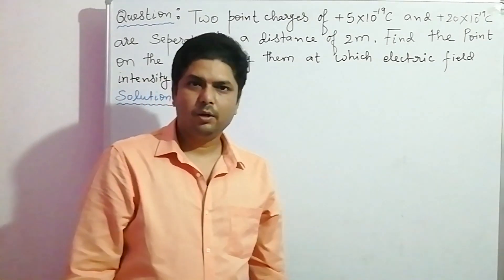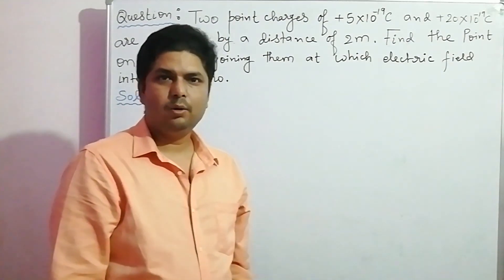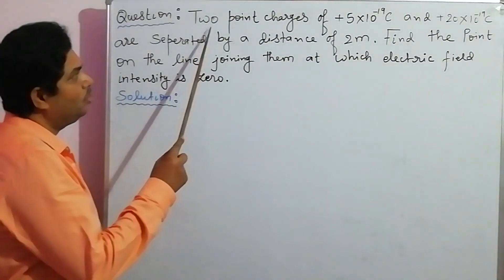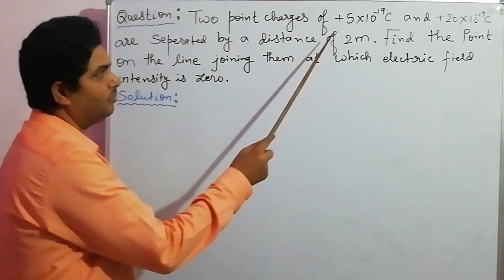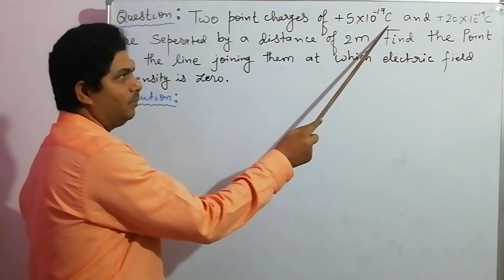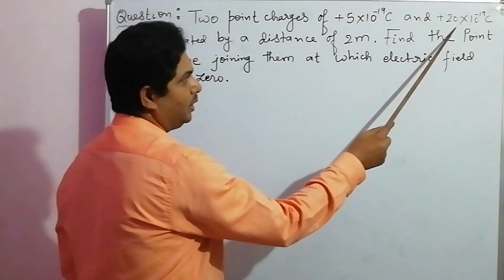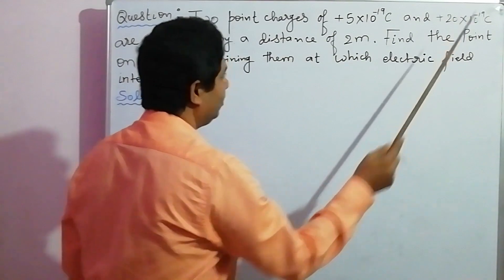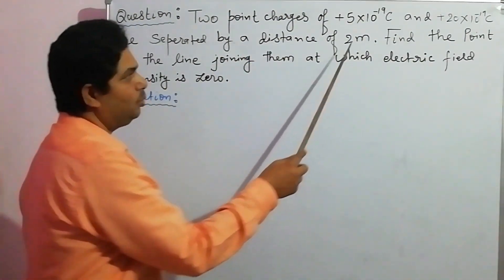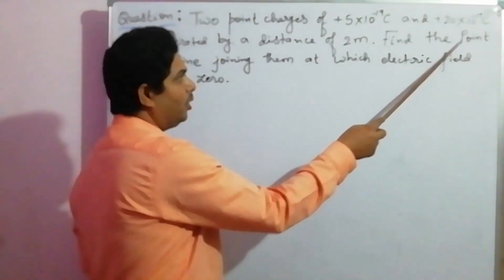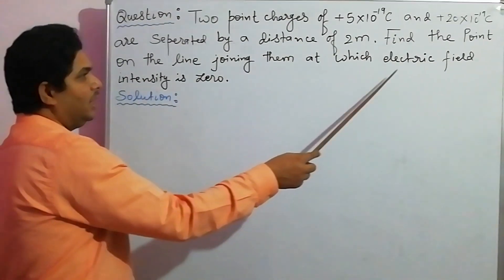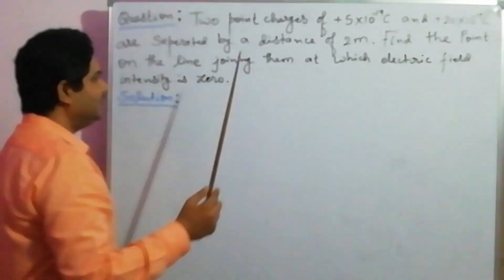Now let us see a numerical based on it. The question is: two point charges of plus 5 times 10 to the power minus 19 coulombs and plus 20 times 10 to the power minus 19 coulombs are separated by a distance of 2 meters. Find the point on the line joining them at which the electric field intensity is zero.